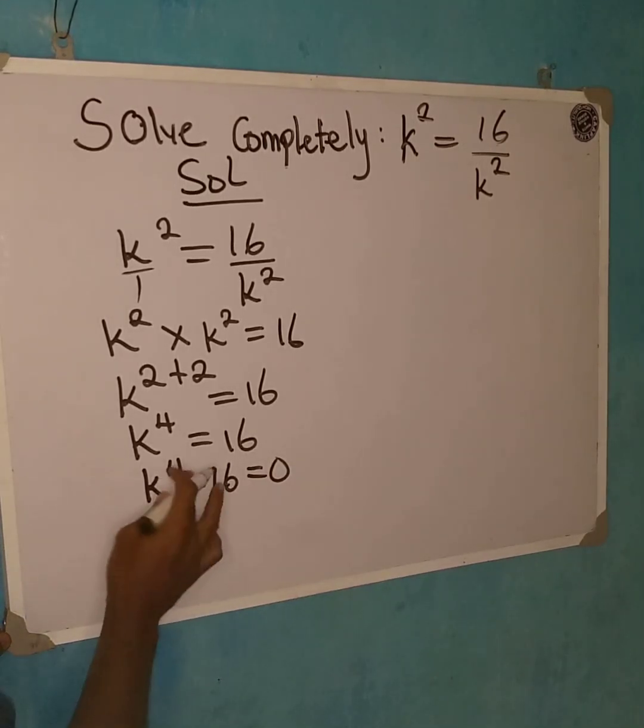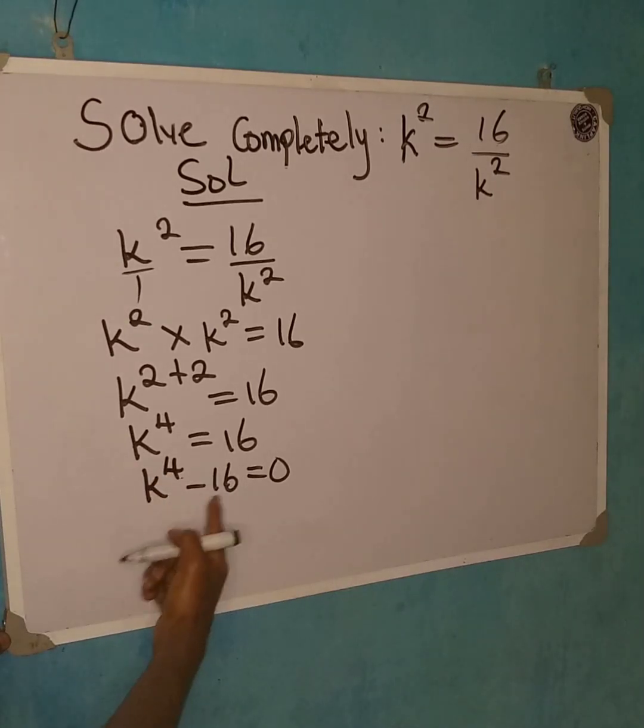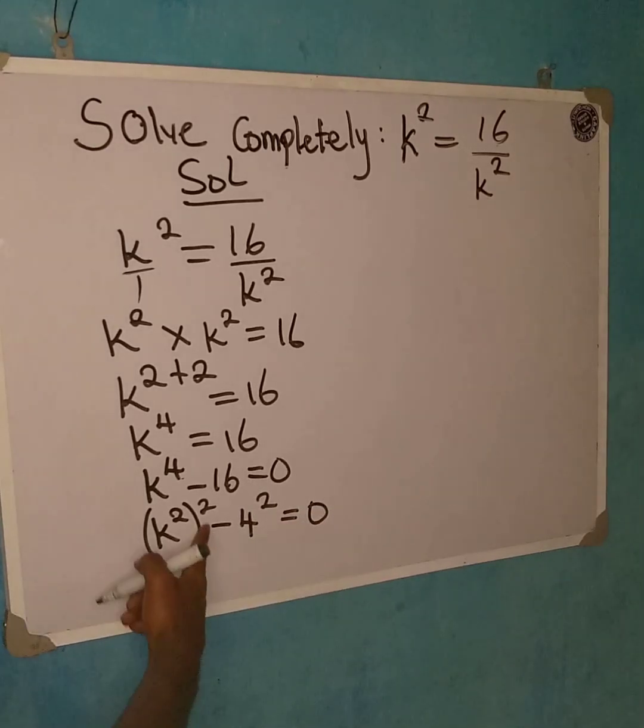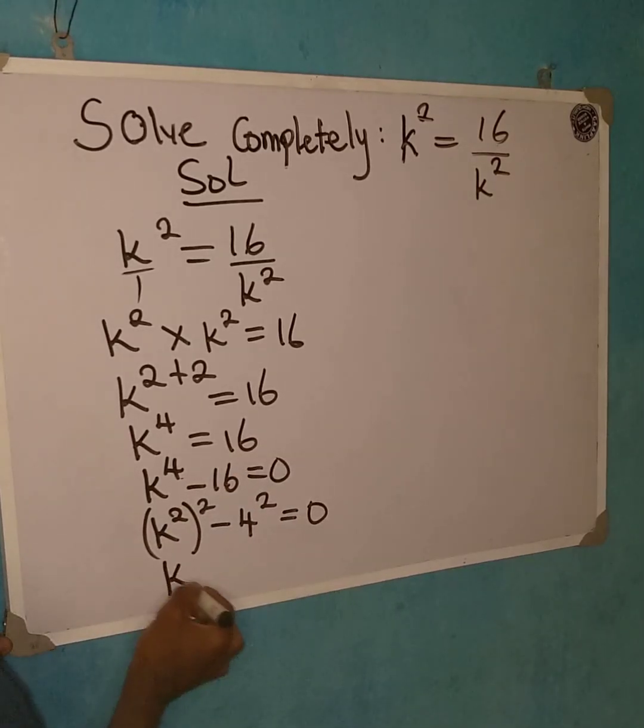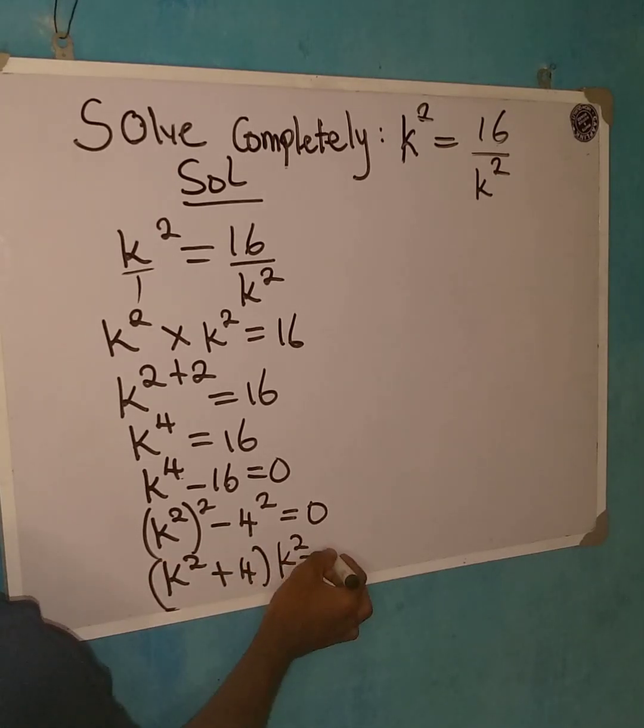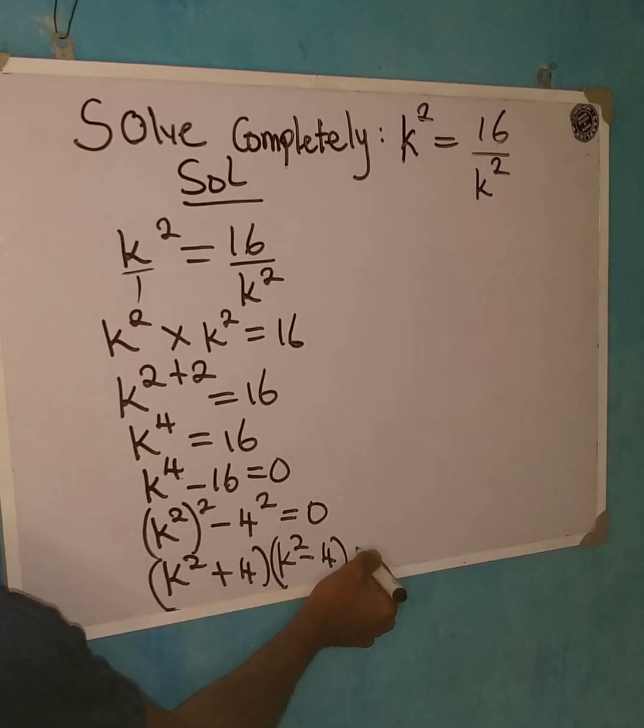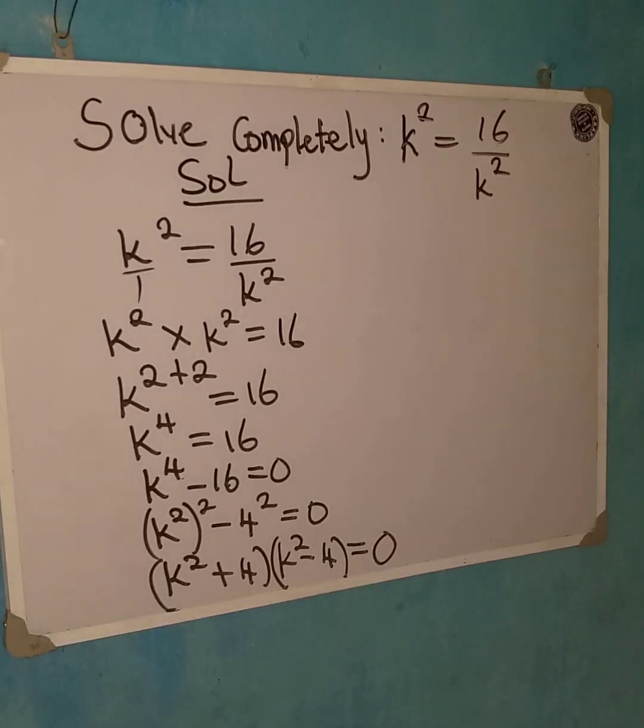So from here, we can now say that we'll break it down to use what we call difference of two squares. Because this is the same thing as k to power 2 squared minus 4 squared equal to 0. Now we have squares in both of them, we can apply difference of two squares. And when applying difference of two squares, you're going to use both positive and negative. So if I want to do that, I will say k squared plus 4 into bracket k squared minus 4. I've used both positive and negative, so the squares are no longer there. Then this will be equal to 0.